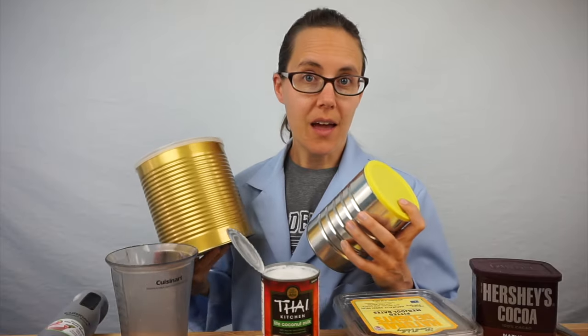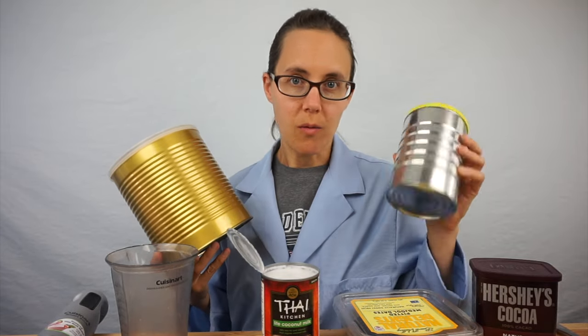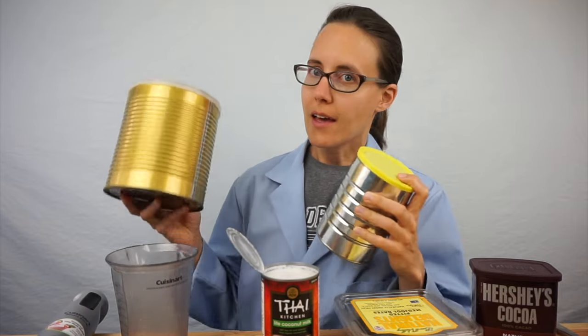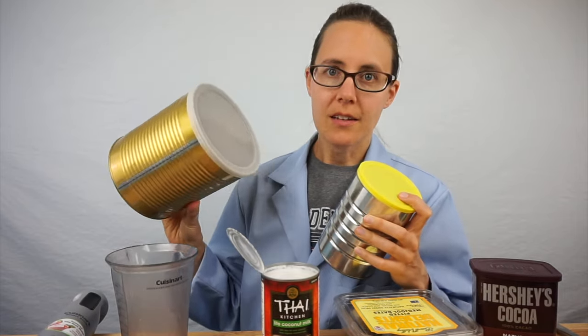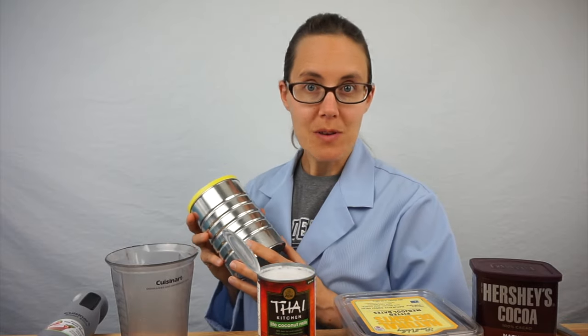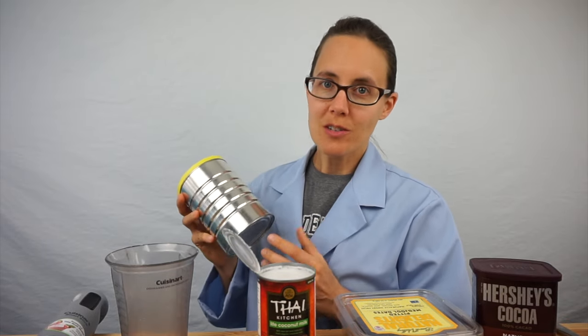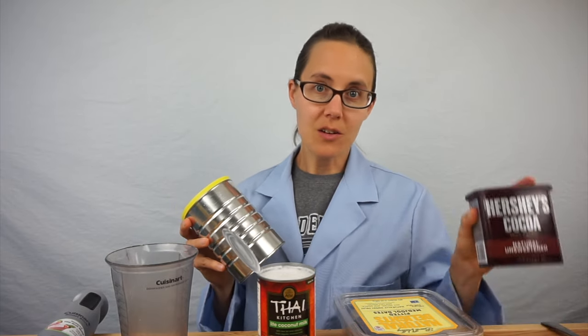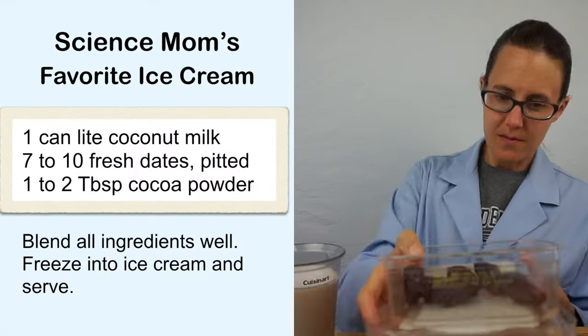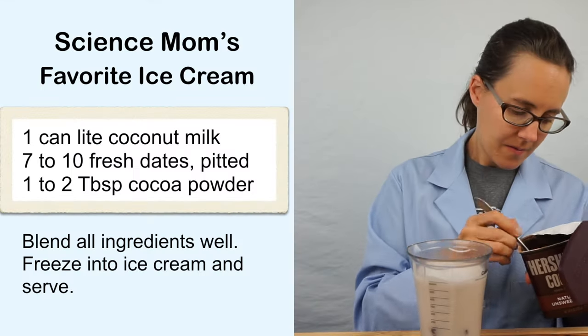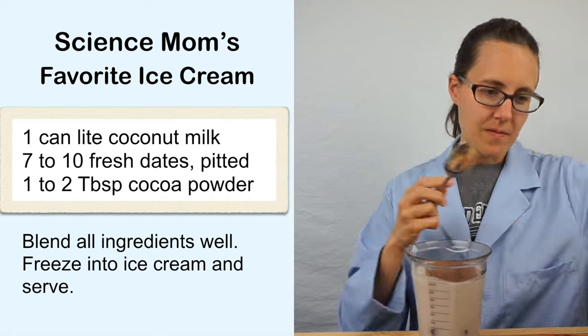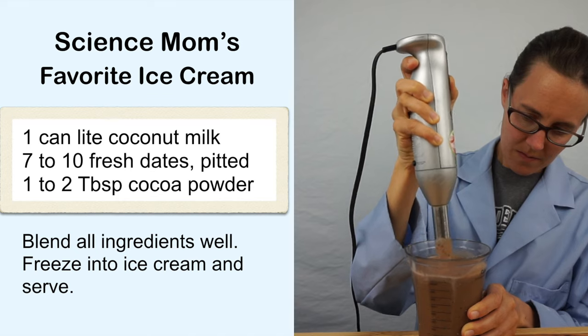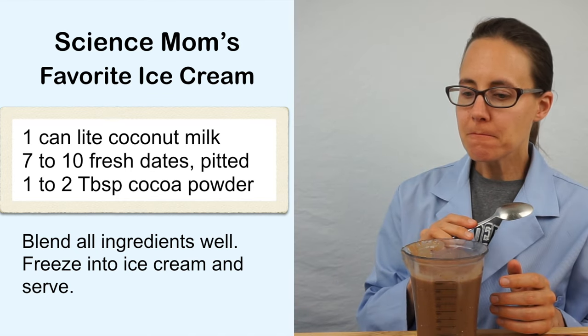To make ice cream in a can, you just need two cans. Coffee cans work well. A one-pound coffee can for the inside that the ice cream will go in, and then a larger number 10 can for the bigger one. You can follow any ice cream recipe you want for this activity, but I'm going to show you how to make a vegan ice cream using just three ingredients: coconut milk, dates, and cocoa powder. Put between 7 and 10 dates into your coconut milk, and add a heaping tablespoon of cocoa powder. Then blend everything up and taste it to see if you want to adjust the ratios at all. Mmm! It tastes really good.